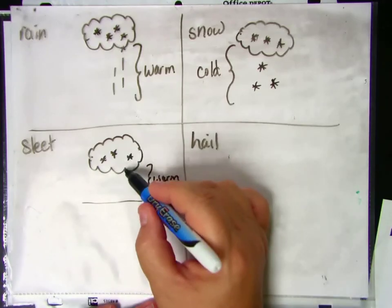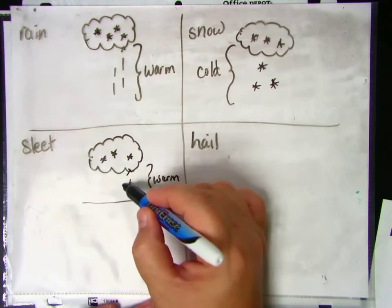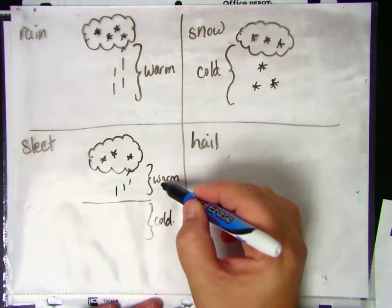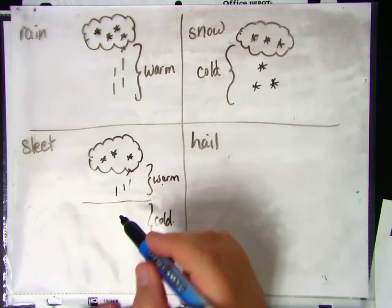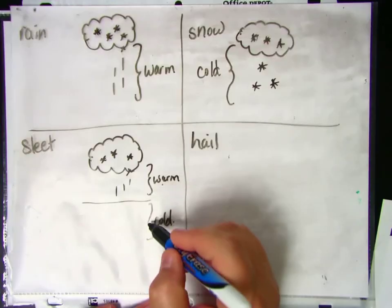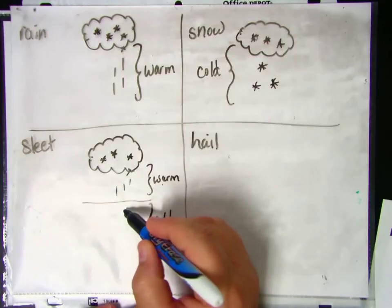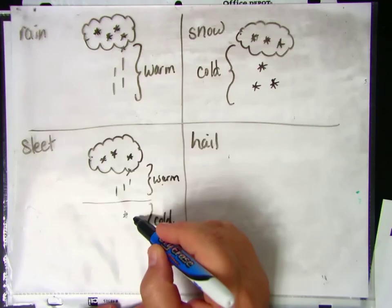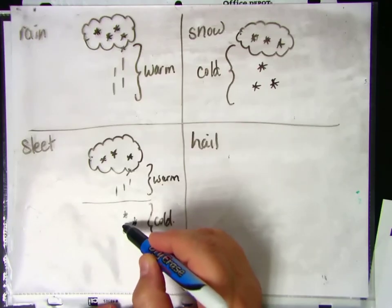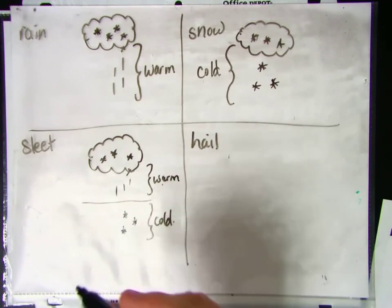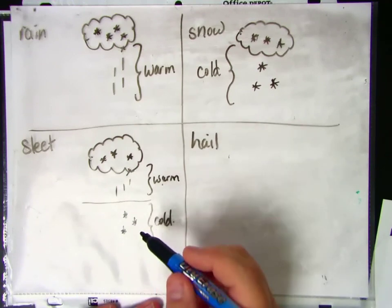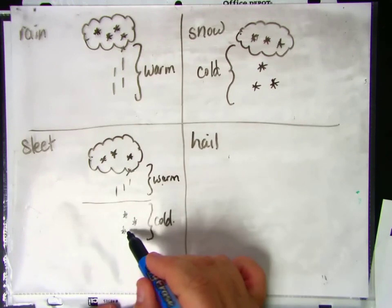And what happens is the ice crystals fall and they melt because of the warm air. And then the rain meets the cold air and starts to freeze again. So you have half rain, half snow. It's like a semi-melted snowflake or a semi-frozen raindrop, and that's what sleet is.